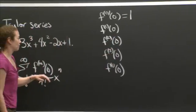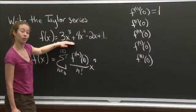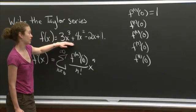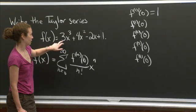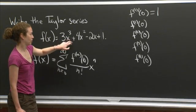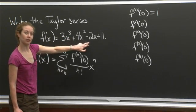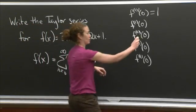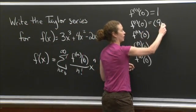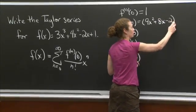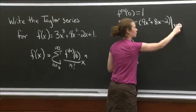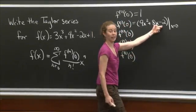All right, what is the first derivative? So I'm going to write out the first derivative and then evaluate it at x equals 0. The first derivative looks like 9x squared plus 8x minus 2. Evaluating at x equals 0: 0, 0, I get negative 2.